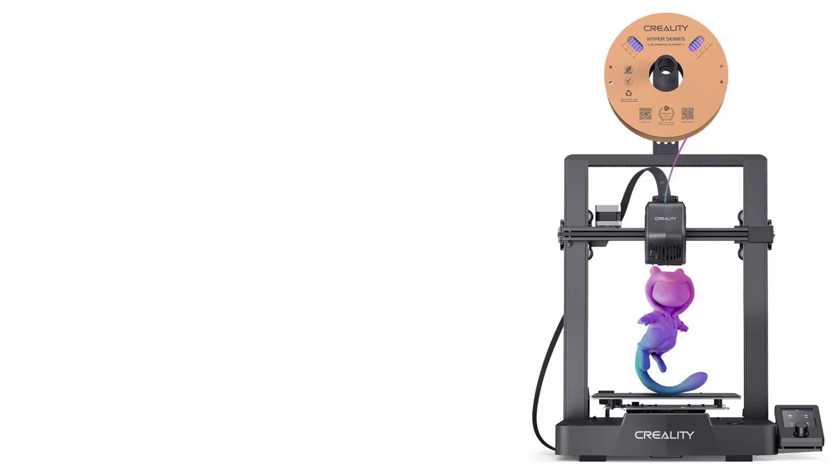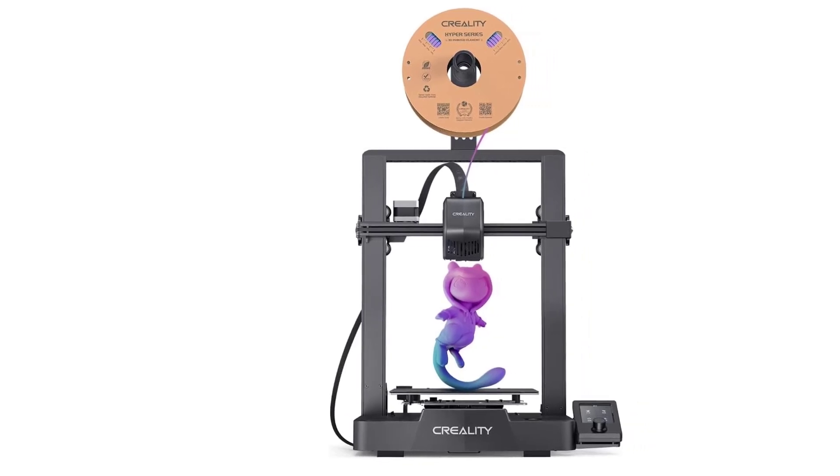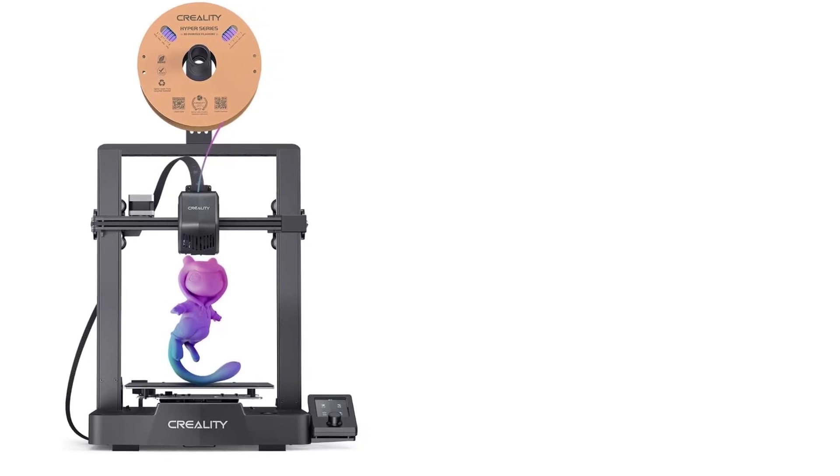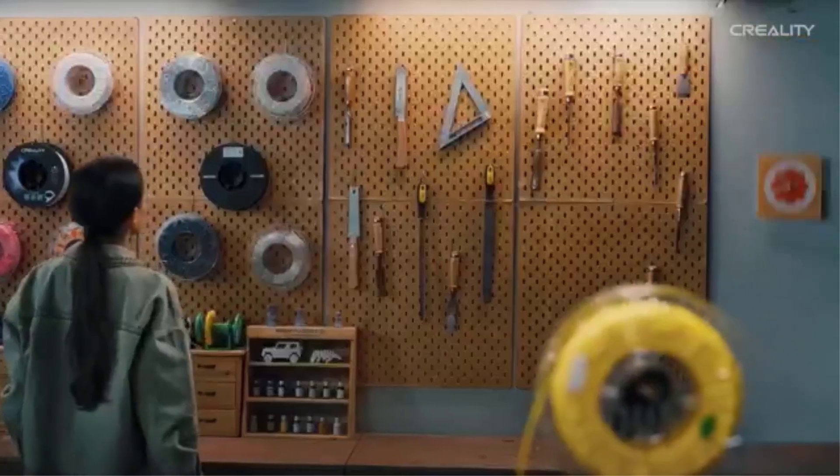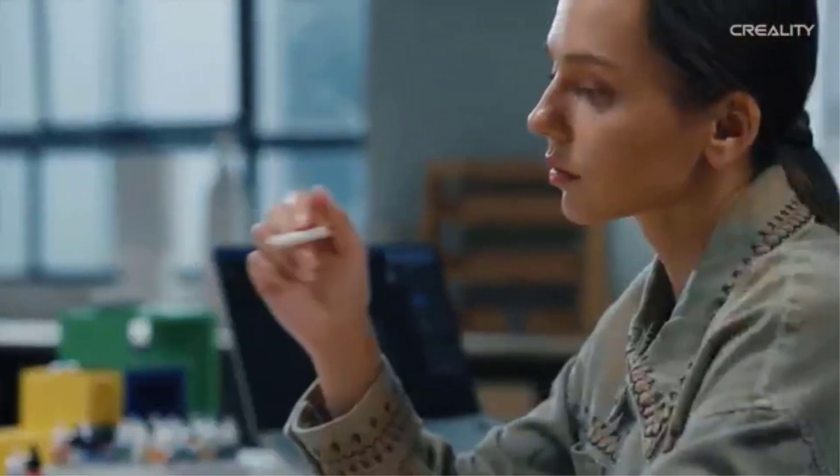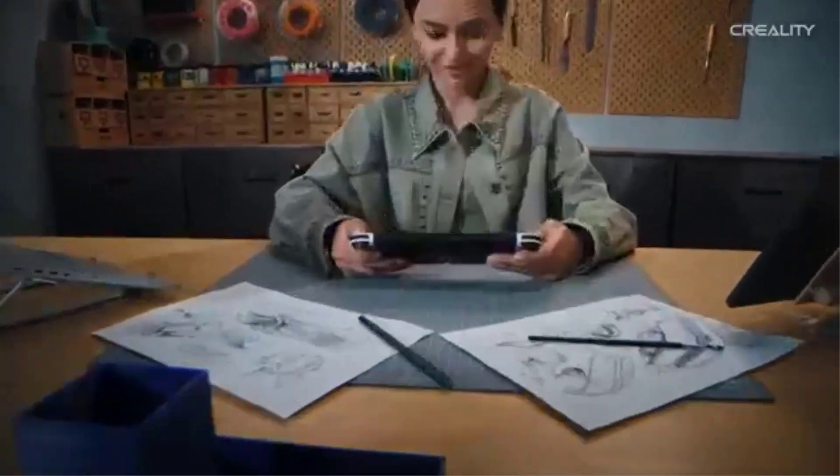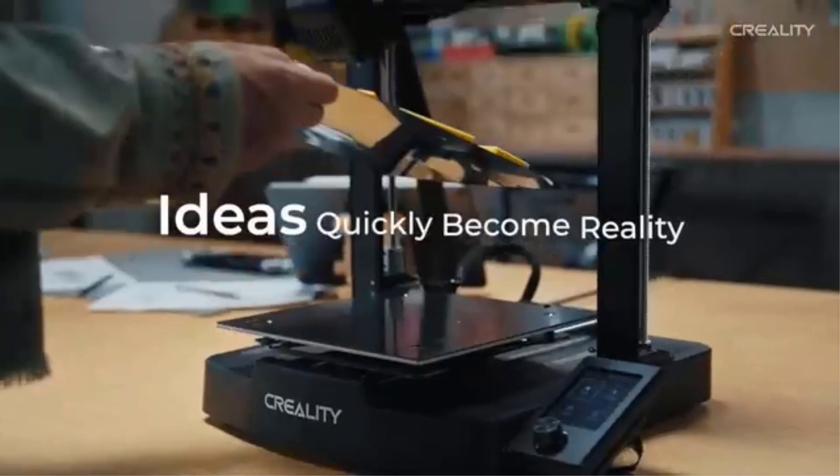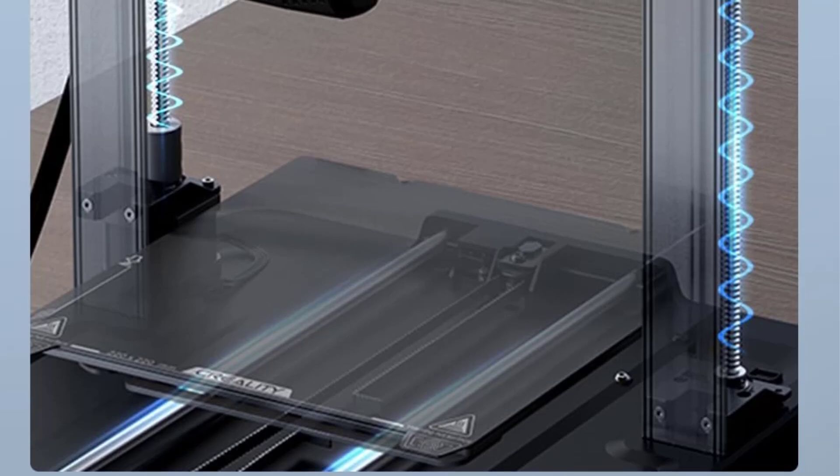One of its standout features is the CR-Touch Auto Leveling System, which ensures precise bed leveling and eliminates the need for manual adjustments. This improves print consistency and reduces failures. Additionally, the Sprite Direct Extruder allows for smooth filament feeding, supporting various materials like PLA, PETG, and TPU with ease. The Auto Load Filament Function simplifies material handling by automatically detecting and feeding filament into the extruder, reducing manual effort and potential errors. The dual Z-axis and Y-axis design enhances stability and precision, preventing wobbling and ensuring high-quality prints, especially for taller models.